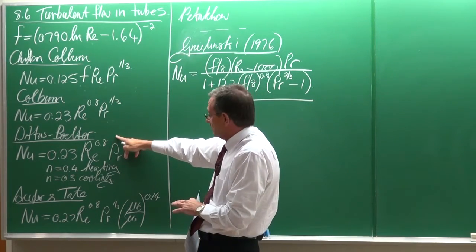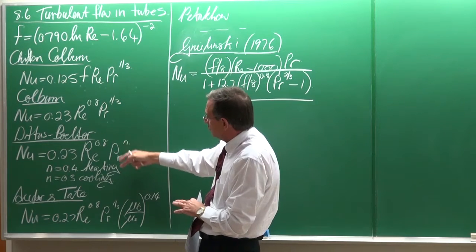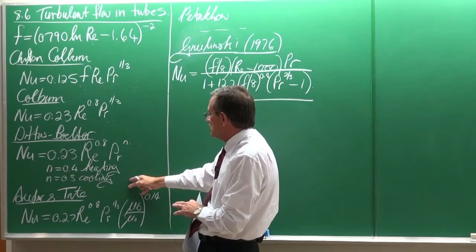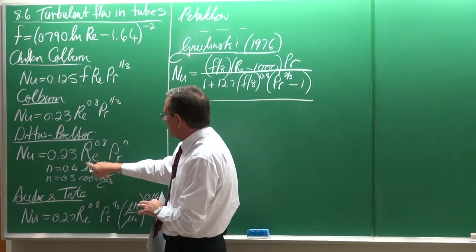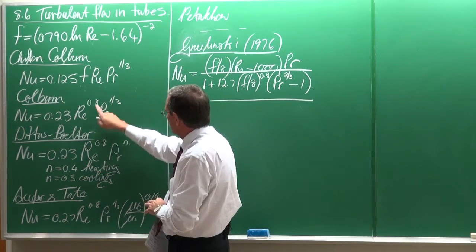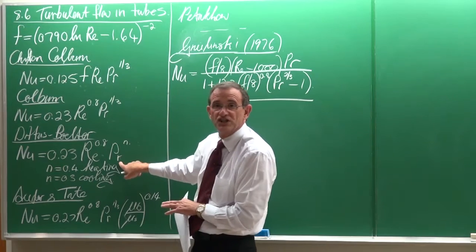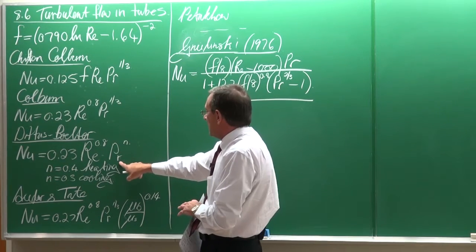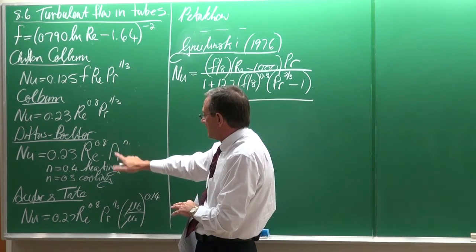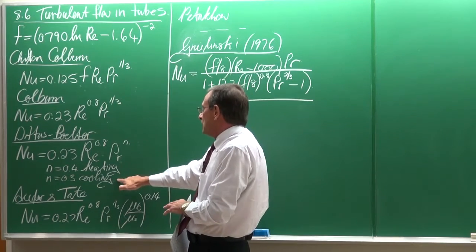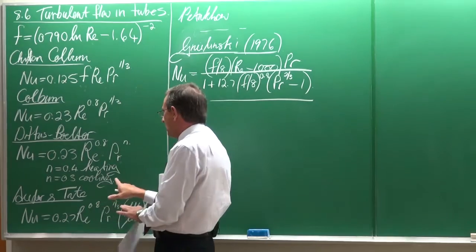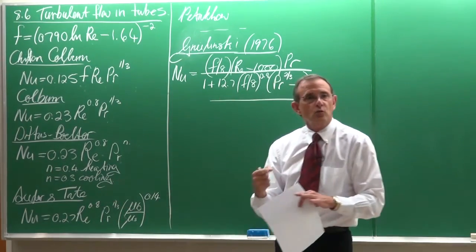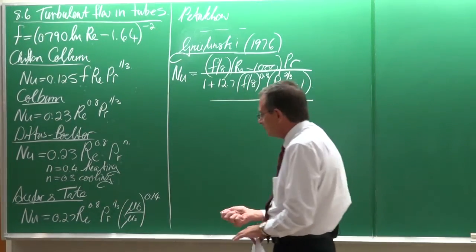And then, Dittes and Boulter, which is now known as the Dittes-Boulter equation, developed this equation. And you can see, it is almost the same as that one, 0.23 Reynolds to the 0.8, but now a small adjustment for the Prandtl number. And what they recommended is that this equation works better if N is equal to 0.4 when you do heating, and N 0.3 when cooling is being done.